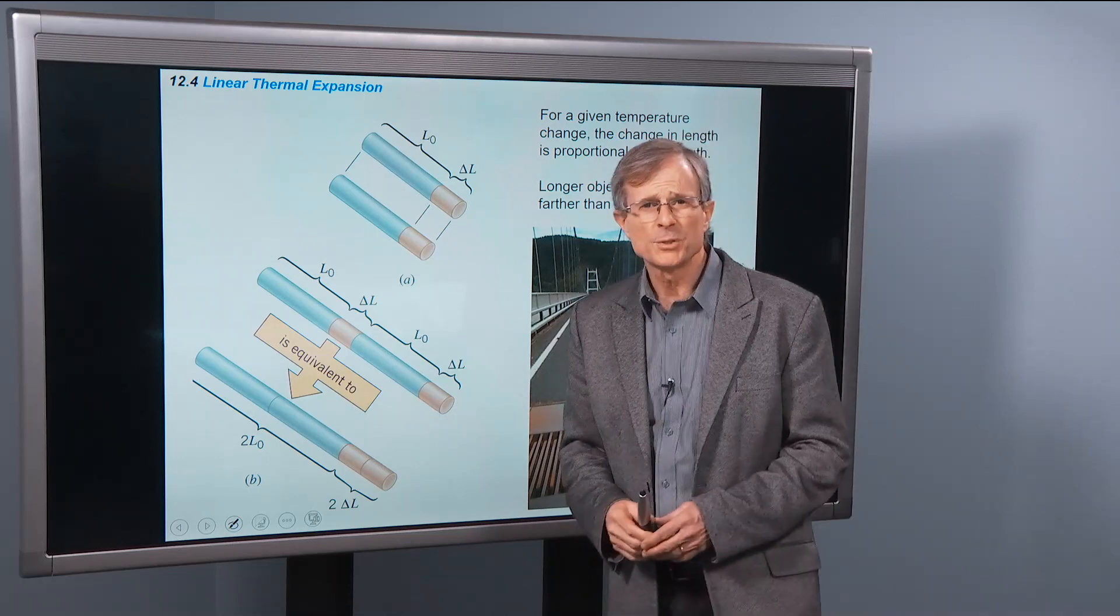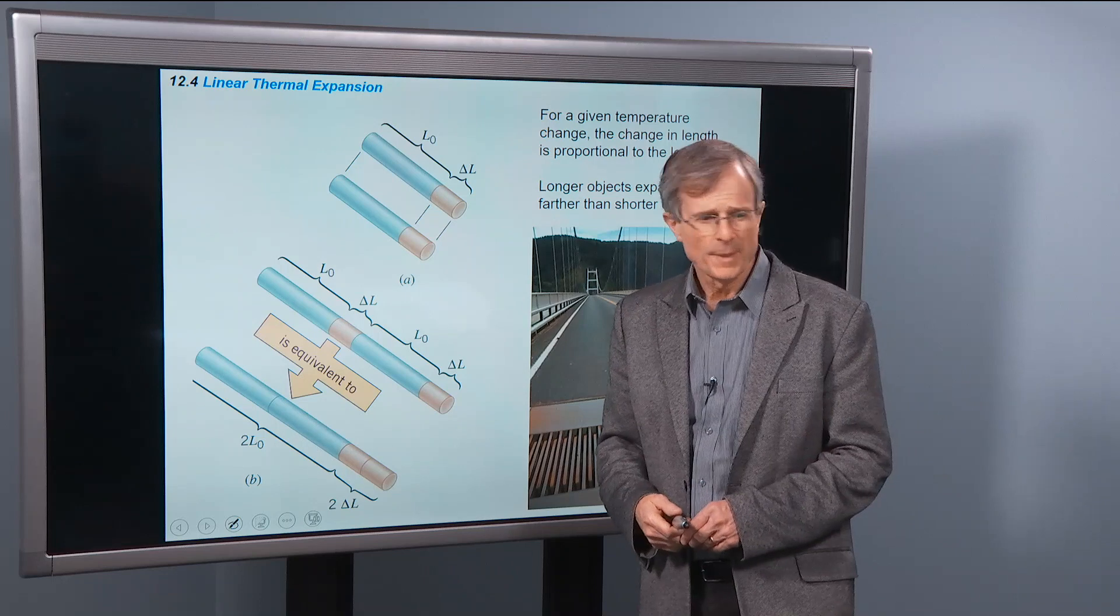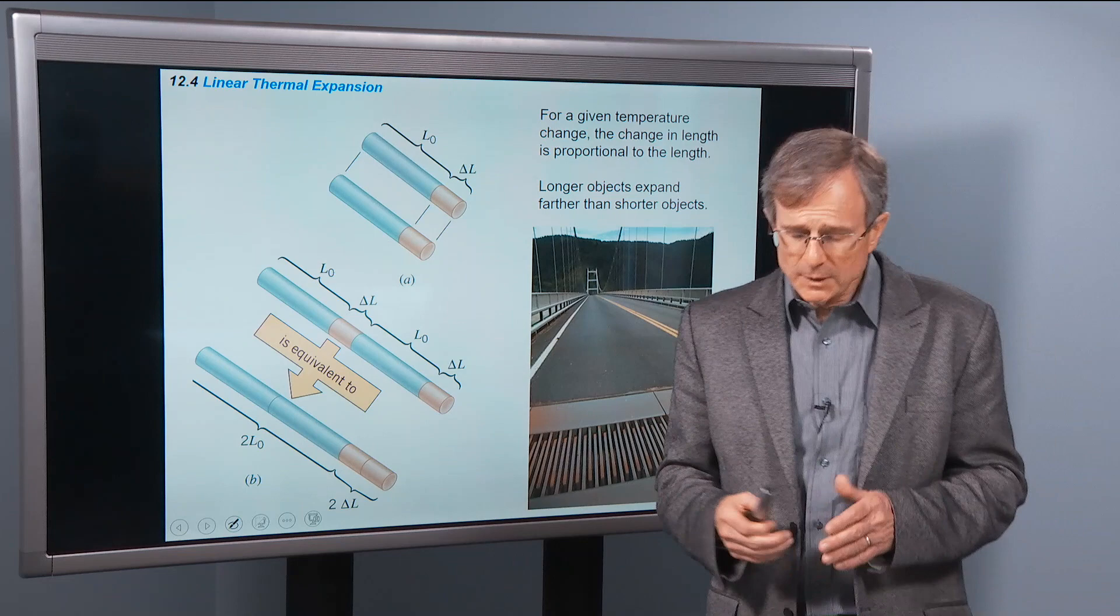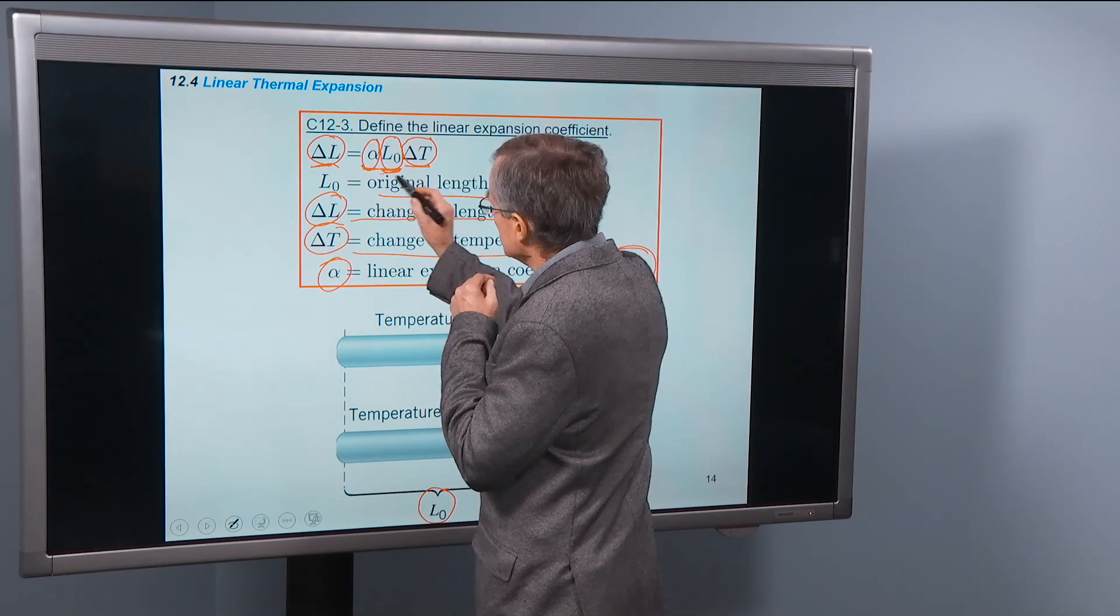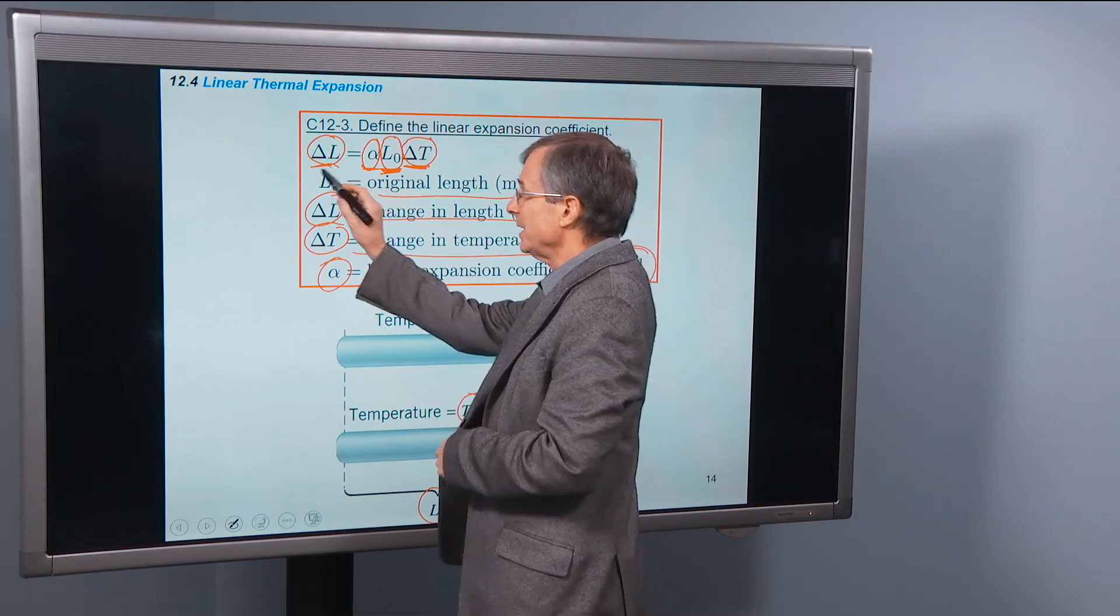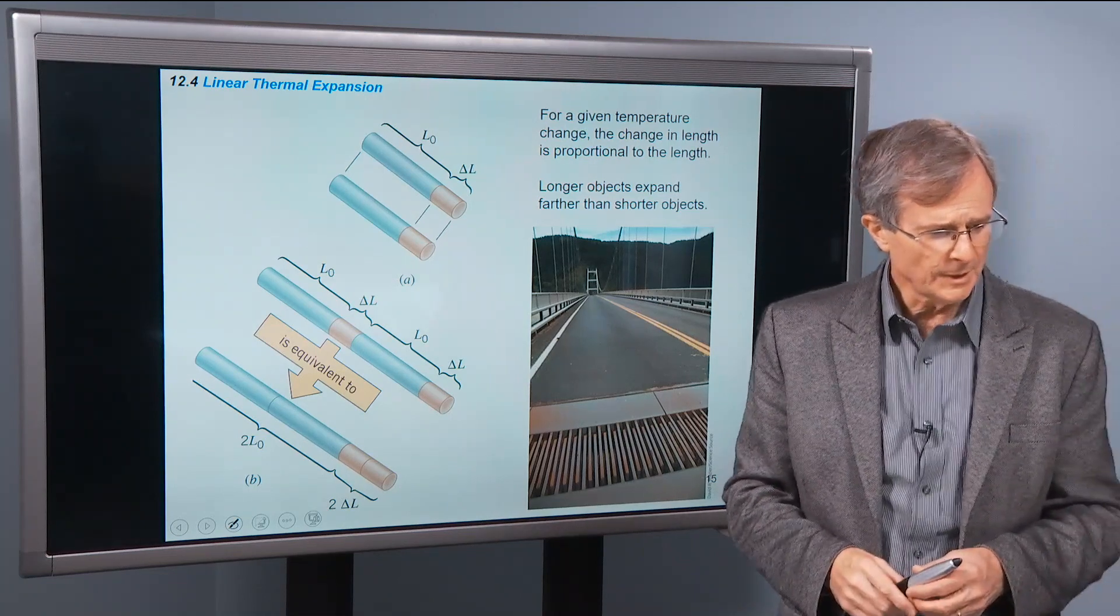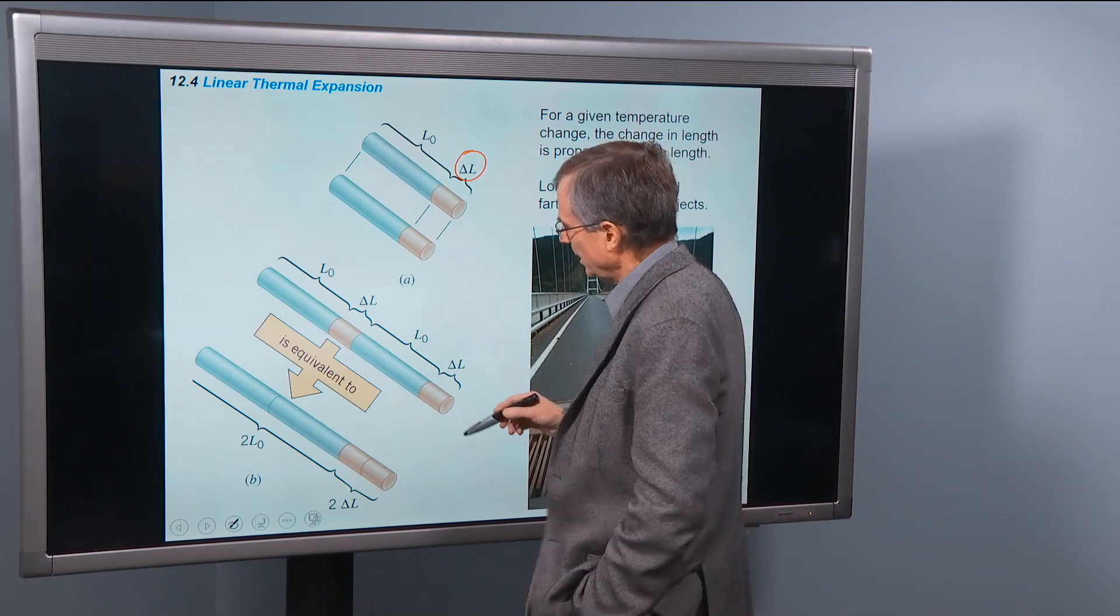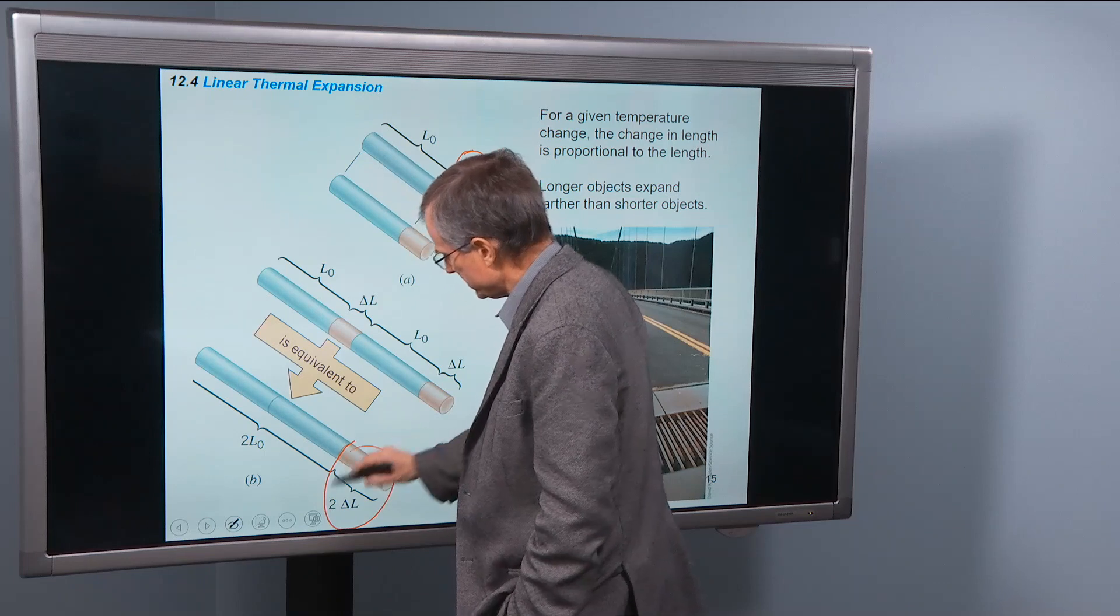For a given temperature change, the change in length is proportional to the length. So the longer the object, the more it will expand. Meaning if you increase the length here, if you double the length for a given change in temperature, you're going to double the amount by which it expands. So a shorter object expands a short amount. A larger object, if you double this, it'll expand by twice that much.